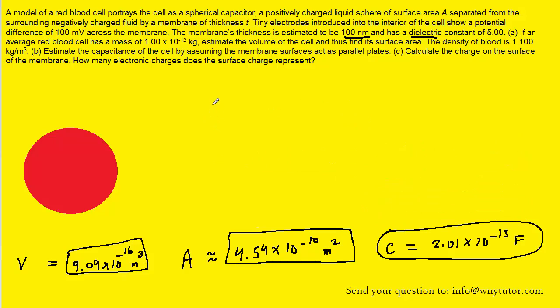For part C, we can calculate the total charge on the surface of the membrane by taking the capacitance of the membrane and multiplying it by the potential difference across the membrane.